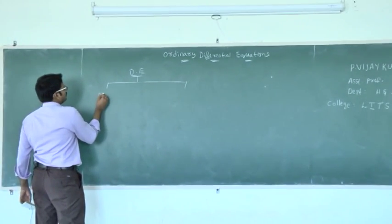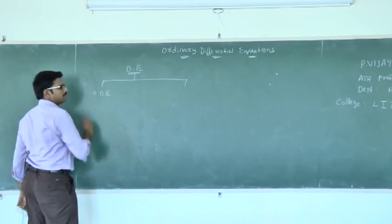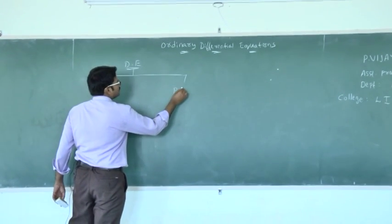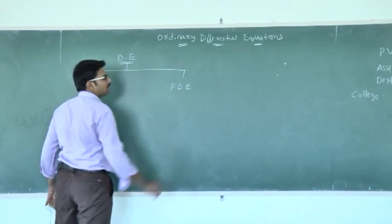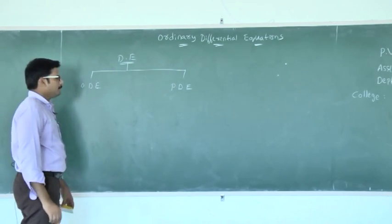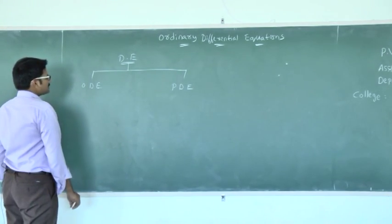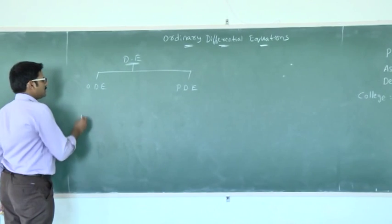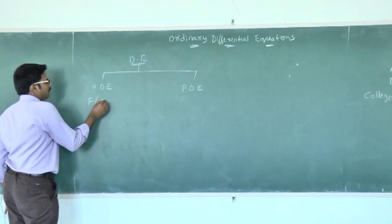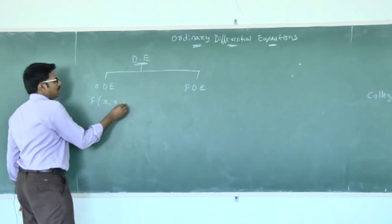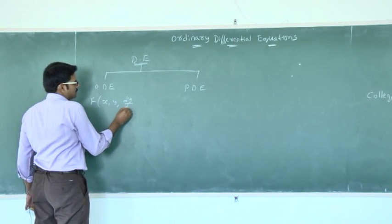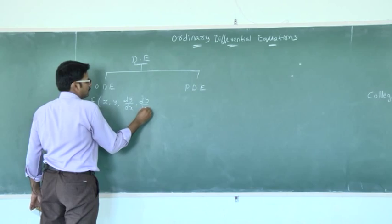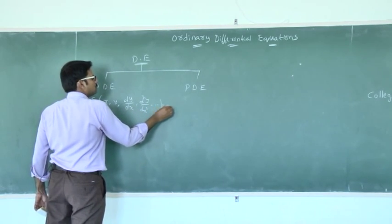The two types are: ordinary differential equation (ODE) and partial differential equation (PDE). The standard form of the ordinary differential equation is f(x, y, dy/dx, d²y/dx², ...) = 0.